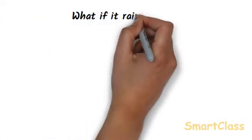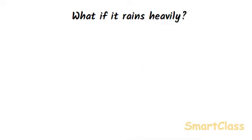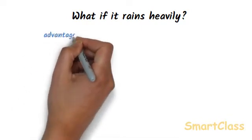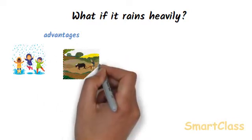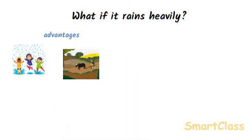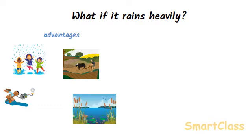Every place on the earth gets rain in varying amounts. In some parts of the world it rains throughout the year, whereas in other parts it rains only for a few days in a year. In our country, most of the rainfall occurs in the monsoon season. Rains bring relief by cooling the environment after hot summer days. The sowing of many crops depends on the arrival of rains during monsoon. Rains provide water in rivers and dams of hydroelectric power plants, fill lakes and ponds which act as sources of fresh water, and are also responsible for groundwater stored under the surface of the earth.